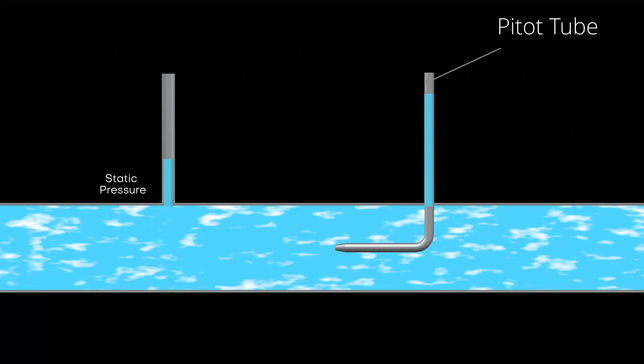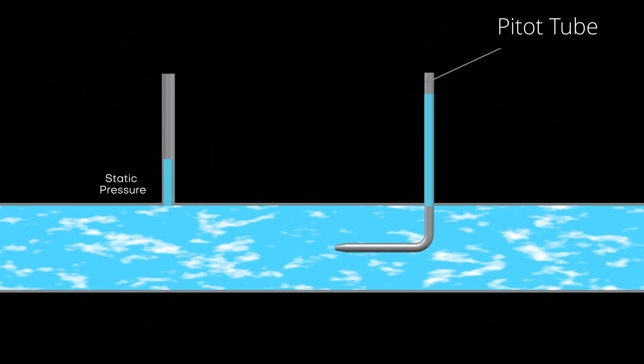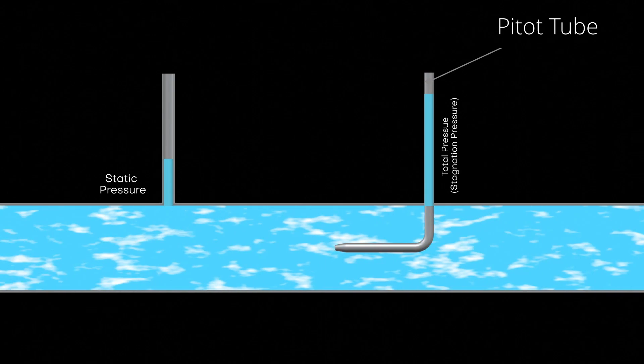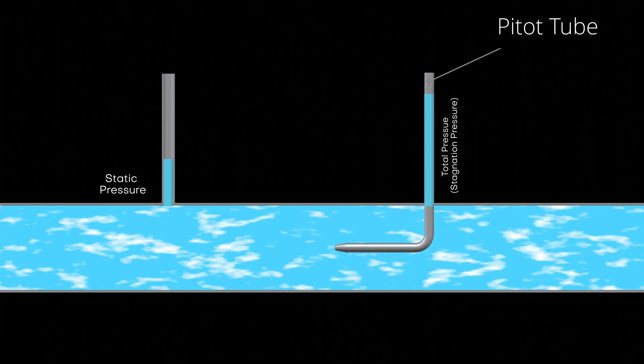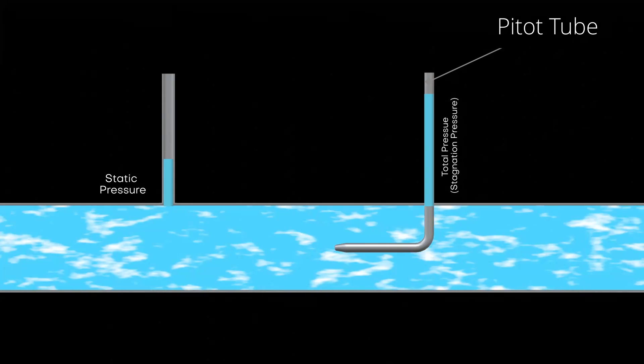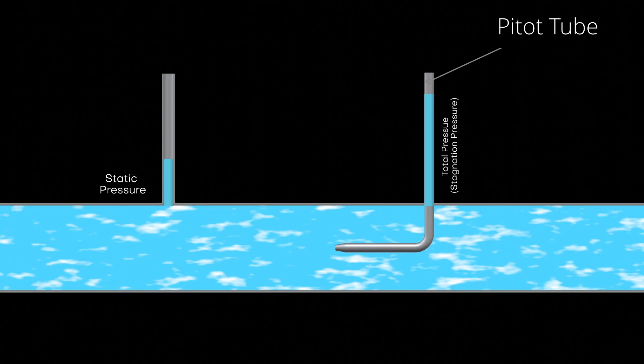When the fluid passes through the Pitot tube, it creates a fluid stream where it is brought to rest isentropically. This leads to the creation of total pressure or stagnation pressure, which is the sum of static pressure and dynamic pressure.